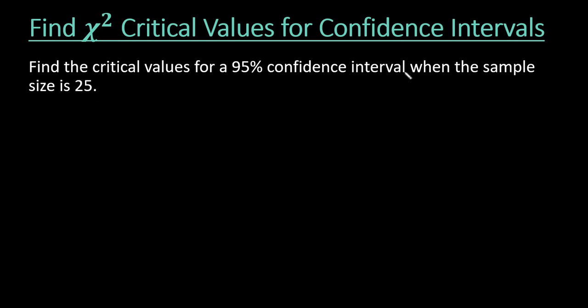Find the critical values for a 95% confidence interval when the sample size is 25. So the first thing that we need to know is our level of confidence. In this case, our level of confidence is 0.95,